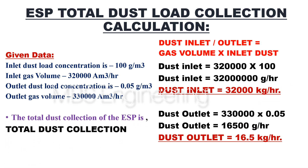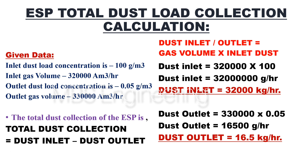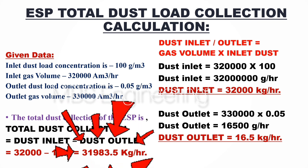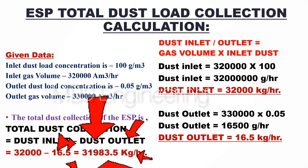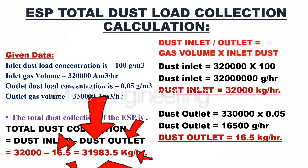Finally, total dust collection is equal to the dust concentration at inlet minus dust concentration at outlet — that is, 32,000 minus 16.5. As per the given parameters and calculation, the obtained value of ESP total dust load collected is 31,983.5 kilograms per hour.